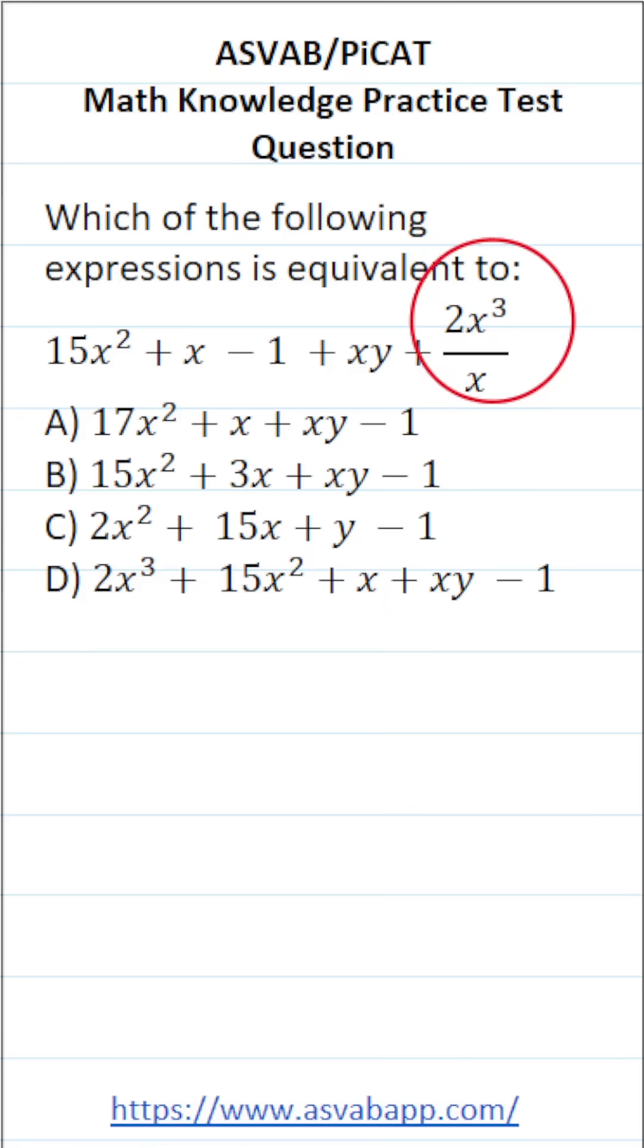We're going to use one of the laws of exponents to simplify this. And I'm going to rewrite this down here like this: 2 times x to the third over x. And again, since there's no power expressed, we can write this as to the first power.